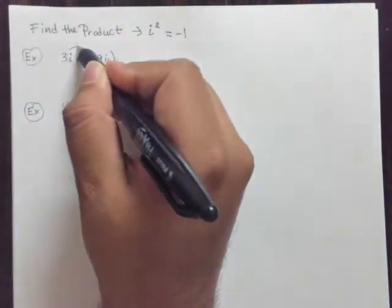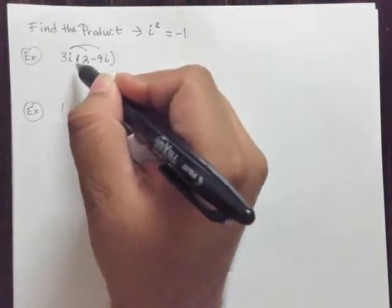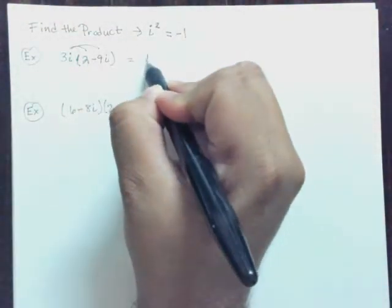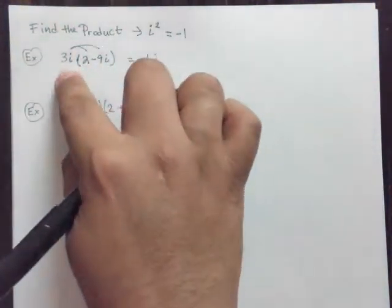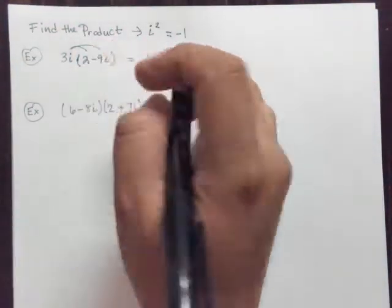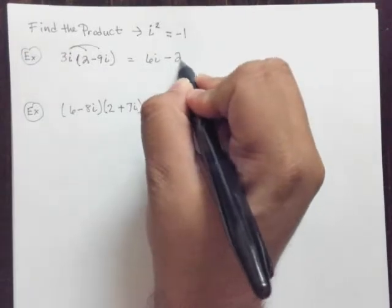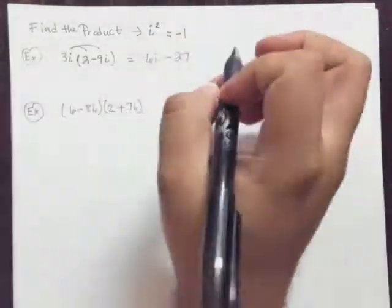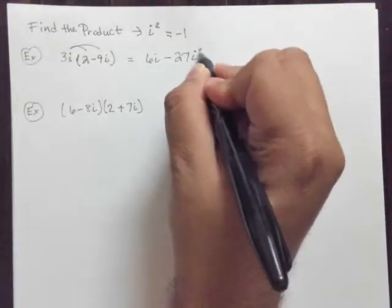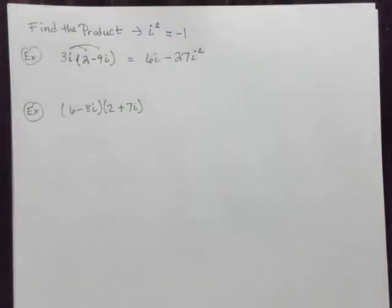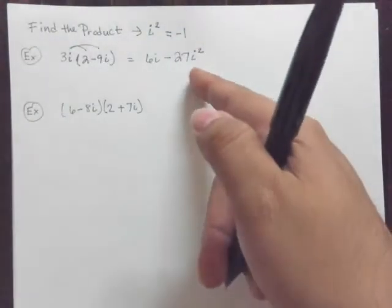So let's see. We're going to distribute here. All right, 3i times 2 is 6i, and 3i times negative 9i happens to be a negative 27, and i times i gives me this i squared. Okay, so 6i minus 27i squared.